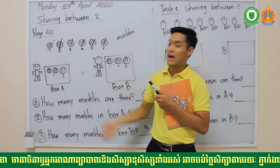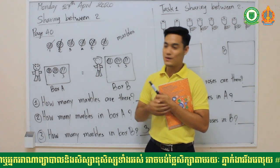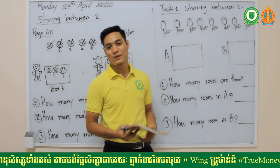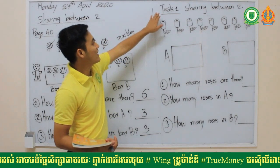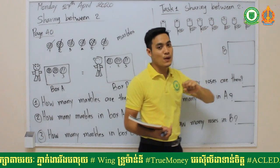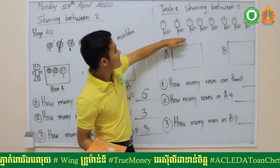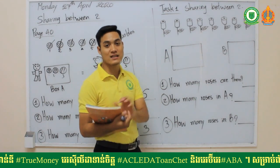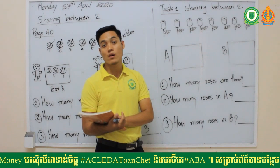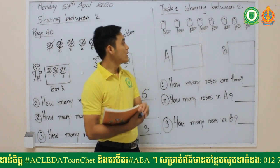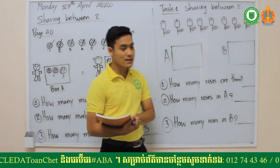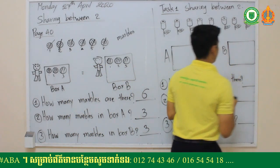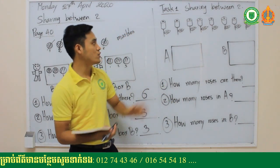So this is how you share between two. That's it for the lesson. Before saying goodbye, let's do Task 1 together — sharing between two. Over here there are some roses. Sometimes flowers come in many different colors, especially red. There are some roses here, and I have two boxes for you to put the roses in when you share between two.